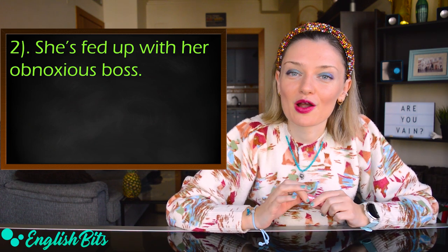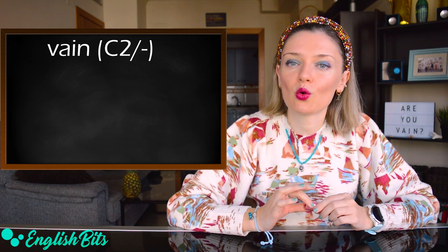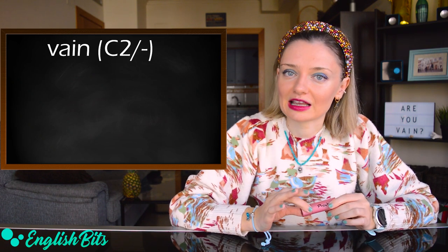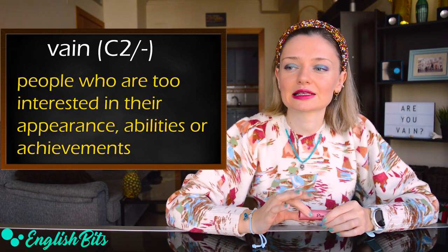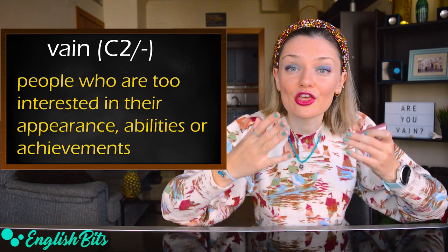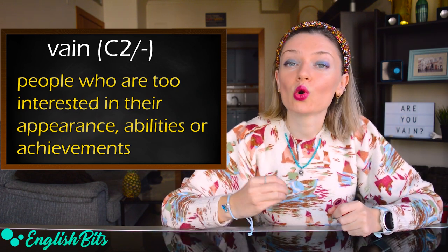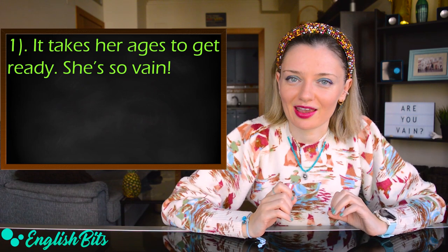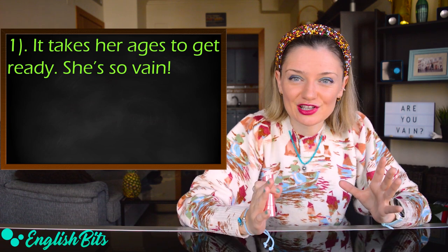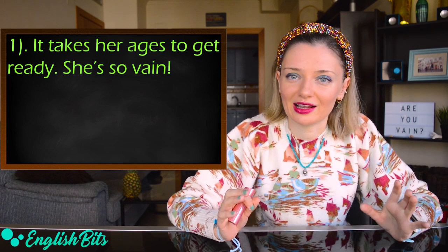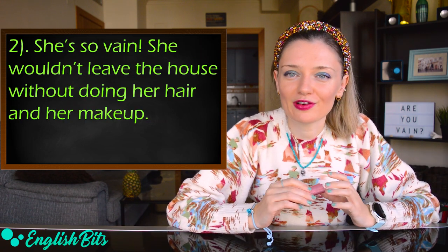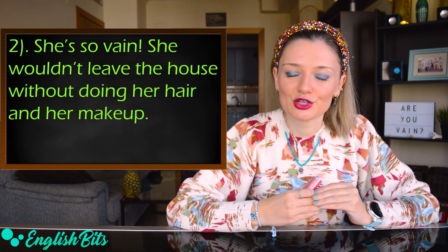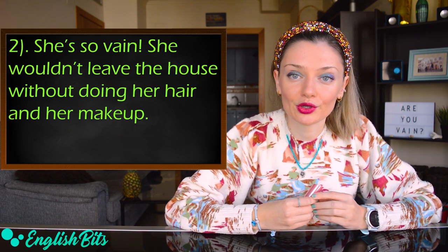Let's move on to our third adjective, which is vain. Be careful with the pronunciation — it's vain, not vain. A vain person is someone who is too interested in their appearance, abilities, or achievements. For example: It takes her ages to get ready — she's so vain. And another: She wouldn't leave the house without doing her hair and her makeup — she's so vain.